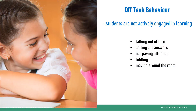Of course, the opposite of on-task behaviour is off-task behaviour, where students are not engaged in learning. For example, talking out of turn, calling out answers, not paying attention, fiddling, and moving around the room. As long as these behaviours are not disrupting students or staff and do not pose a safety risk, we can use a range of positive correction techniques to support students to get back on task.